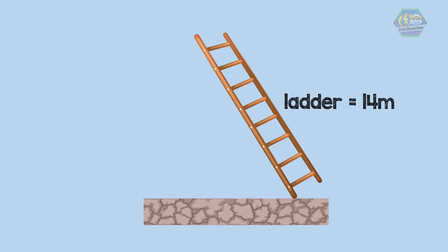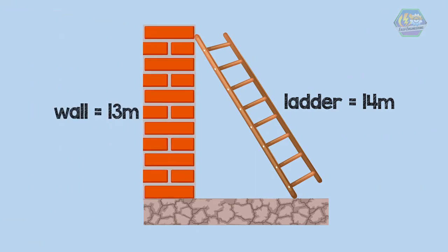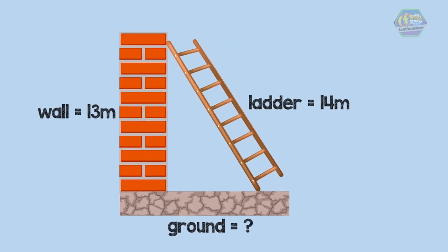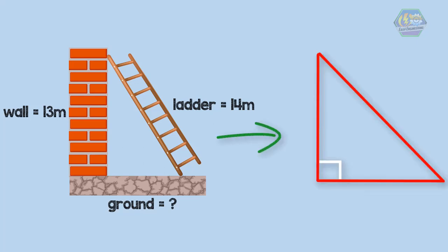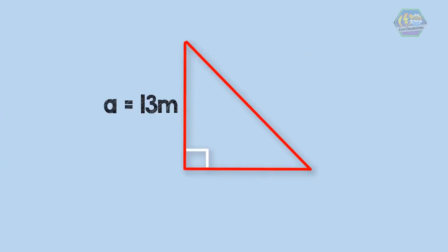Now for another example: a ladder 14 meters long is placed on the ground in such a way that it touches the top of a vertical wall 13 meters high. Find the distance of the foot of the ladder from the bottom of the wall. Take a look at the picture — you can see that the ladder placed on the ground and touching the wall forms a right triangle. Therefore we can easily find the distance. Let a equal 13 meters, the hypotenuse c equal 14 meters, and b is the unknown side of the triangle.